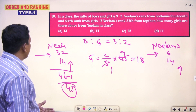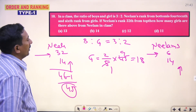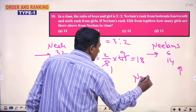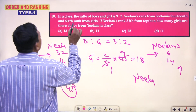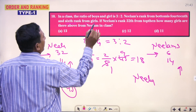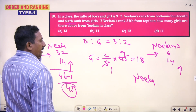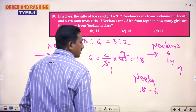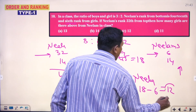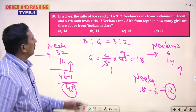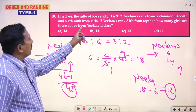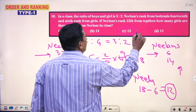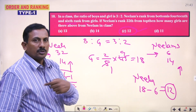18 members. So now in those 18 members, Neelam's rank is 6th from the girls. 18 minus 6 is 12. So there are 12 girls above Neelam. How many girls are there above Neelam means 12. Answer is 12.